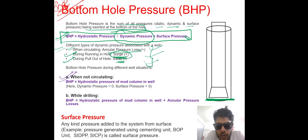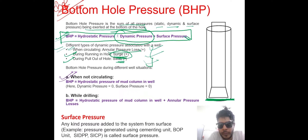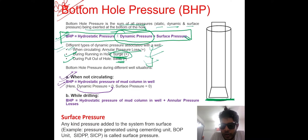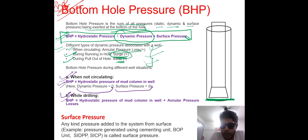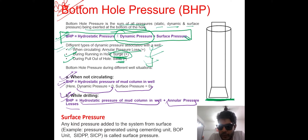Bottom hole pressure in different situations: when not circulating, BHP equals simply the hydrostatic pressure of the mud column in the well - no dynamic pressure or surface pressure. While drilling, BHP equals hydrostatic pressure of the mud column plus annular pressure losses. When the mud is circulating through the drill string and returning up the annulus, friction acts downward, giving us the annular pressure loss component.